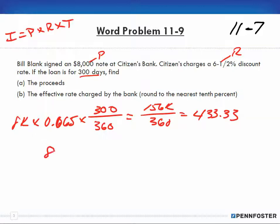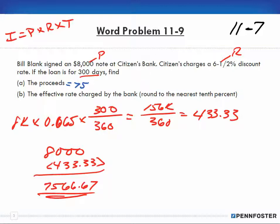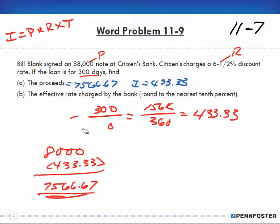And in order to find out what our proceeds are, remember we're taking the $8,000 loan, and since it's discounted that means the bank is taking out their interest up front. So we subtract the $433.33 and we end up with $7,566.67 as our proceeds. So proceeds are equal to $7,566.67 and our interest is $433.33.